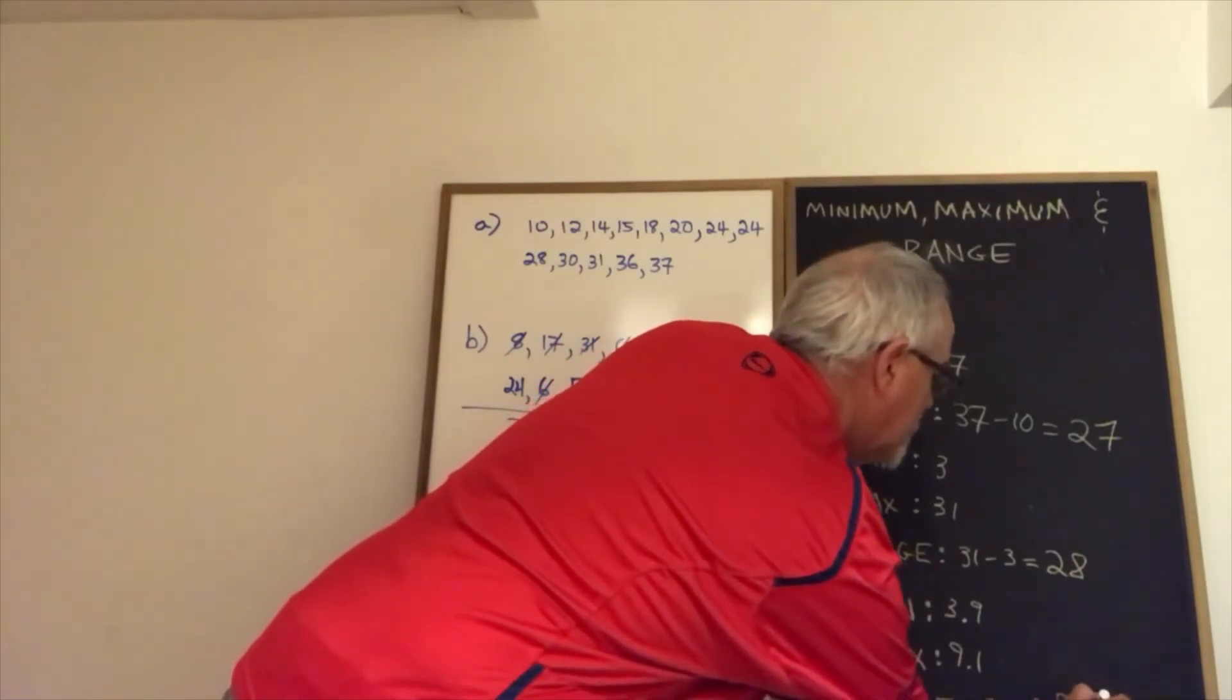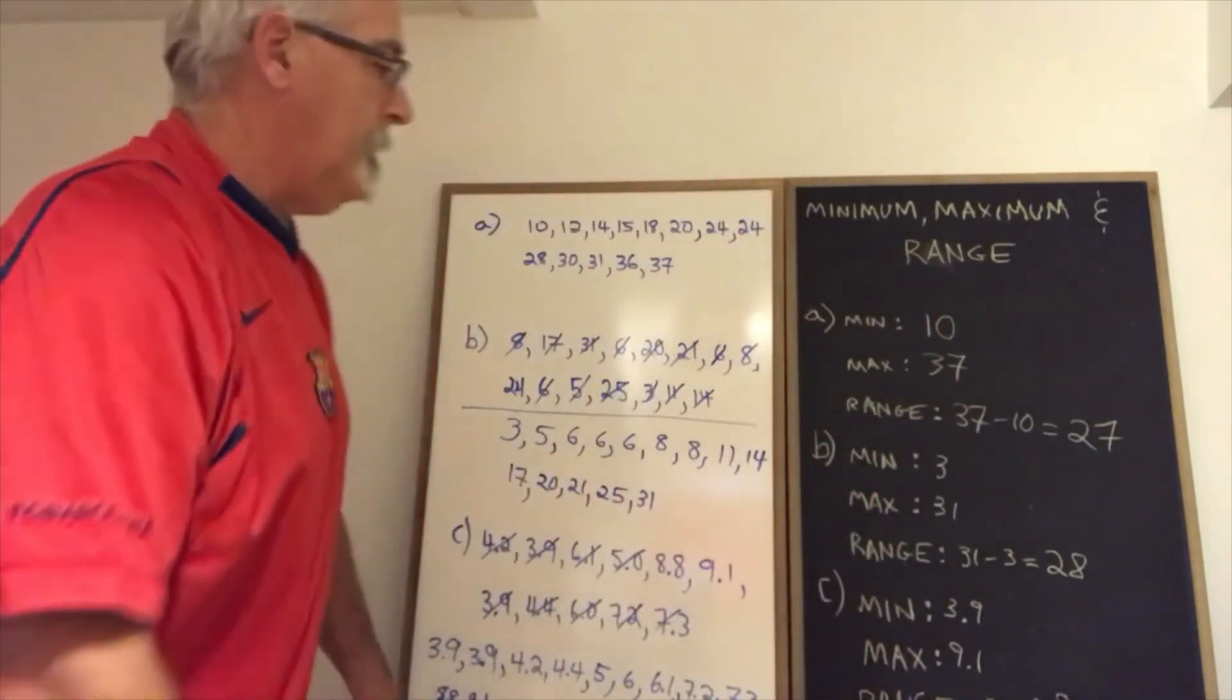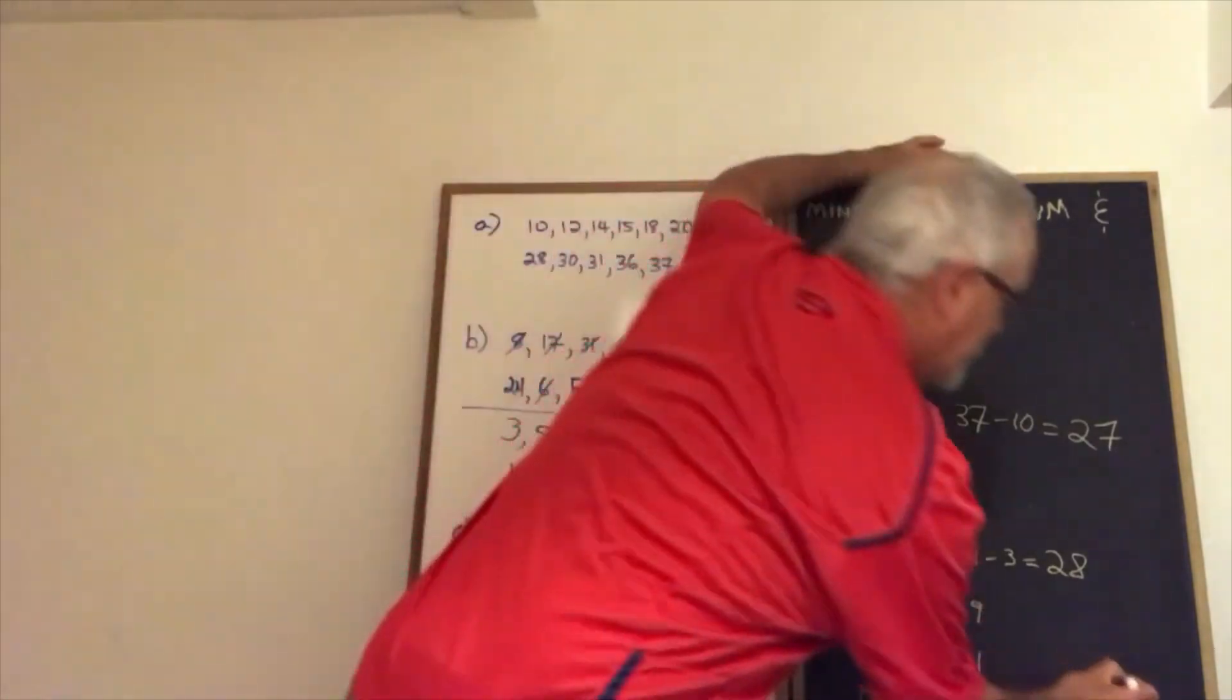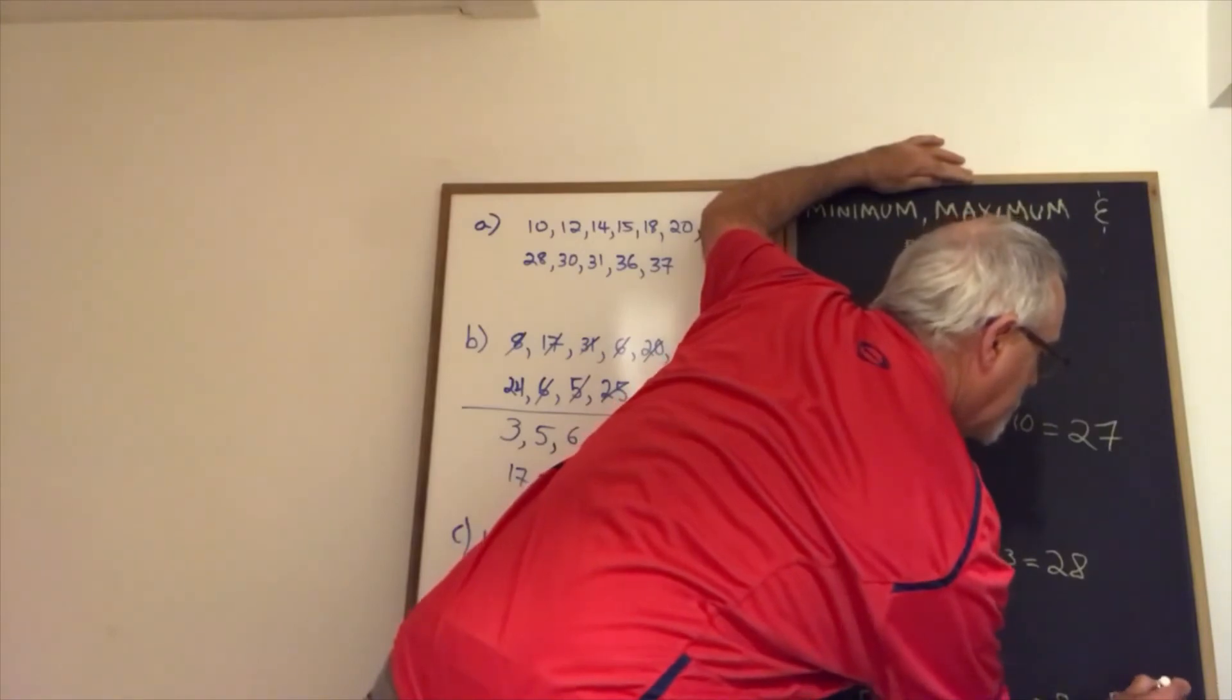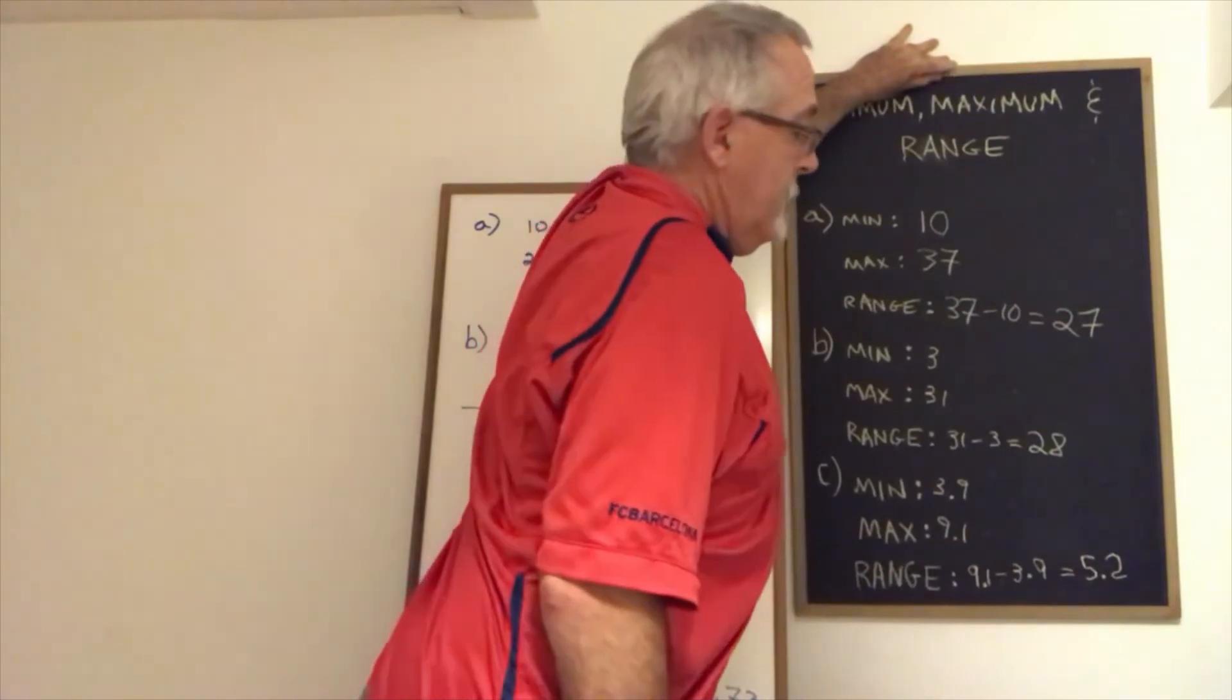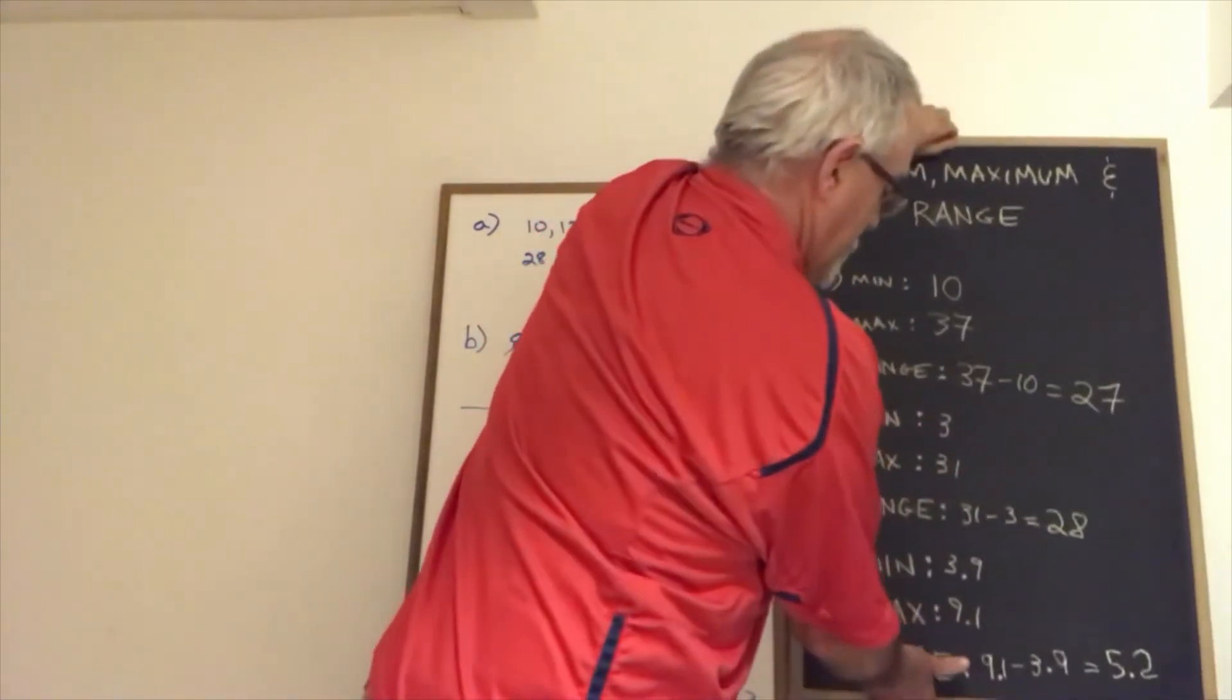Again, not easy to write at the very bottom of the chalkboard. And is it showing? The difference is 5.2. Use calculator as necessary to make sure you don't make a mistake. So that is all there is to it.